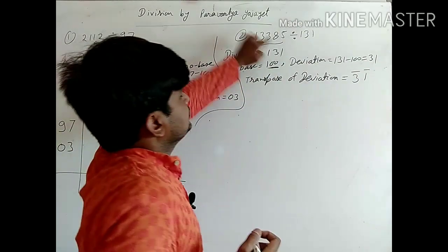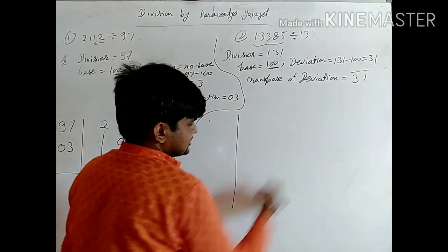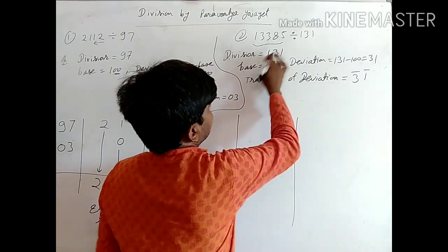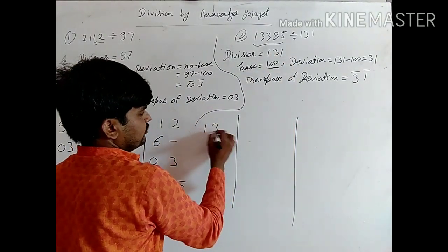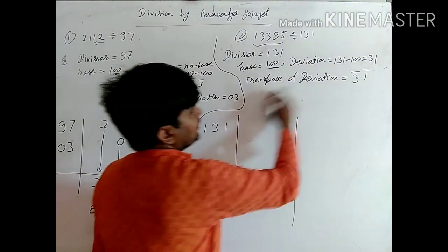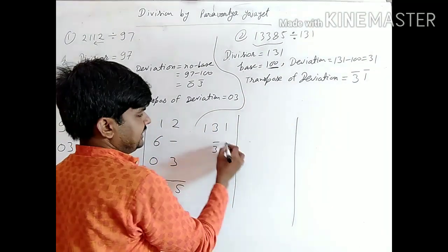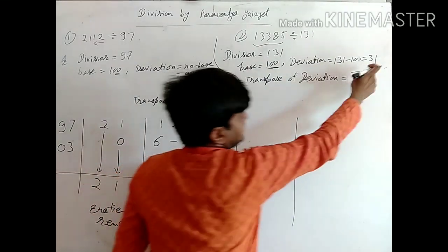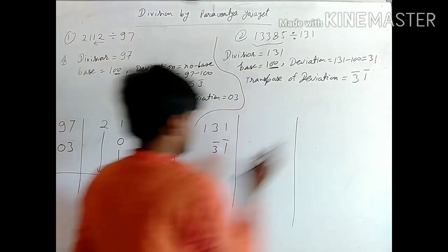Now same, we will make three parts. First part at the top, where our dividend is, that is 131. Below that our transpose of digit is negative 31. See, here we had our deviation that is positive, so we converted it to negative.